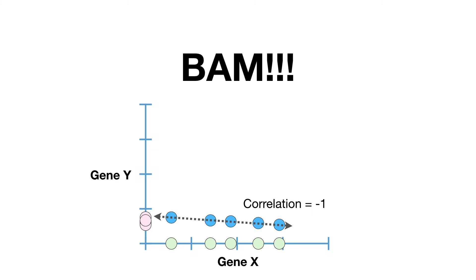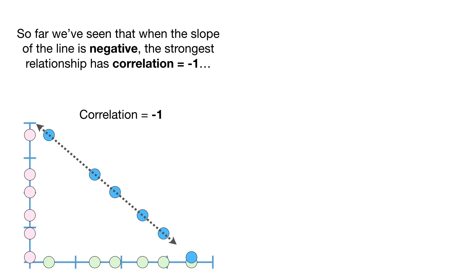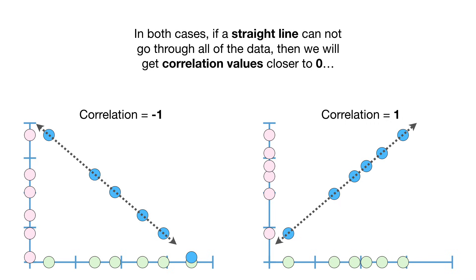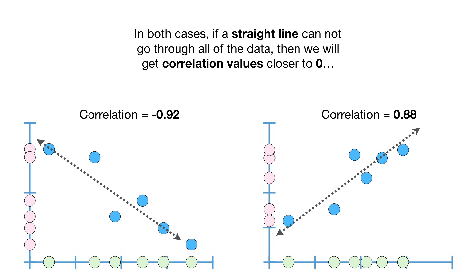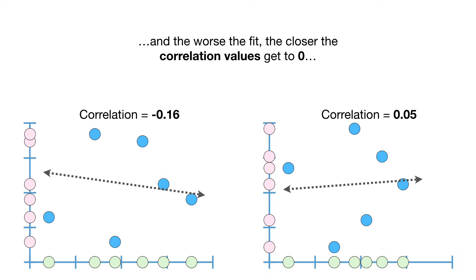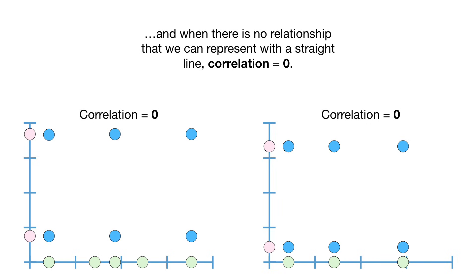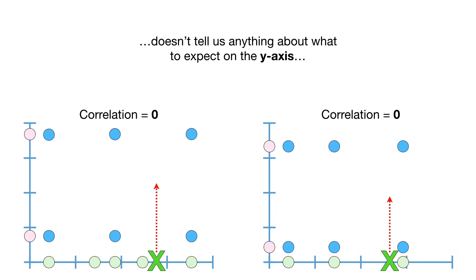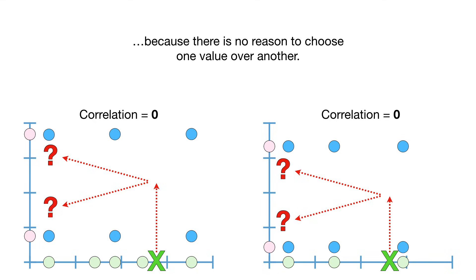So far, we've seen that when the slope of the line is negative, the strongest relationship has correlation equal to negative 1, and when the slope is positive, the strongest relationship has correlation equal to 1. In both cases, if a straight line cannot go through all of the data, then we will get correlation values closer to 0 — and the worse the fit, the closer the correlation gets to 0. When there is no relationship that we can represent with a straight line, correlation equals 0. When correlation equals 0, a value on the x-axis doesn't tell us anything about what to expect on the y-axis.